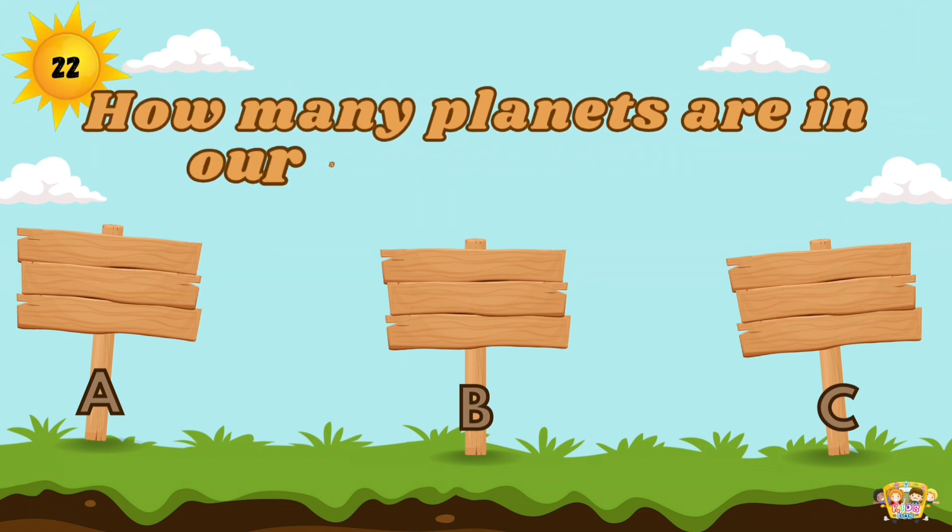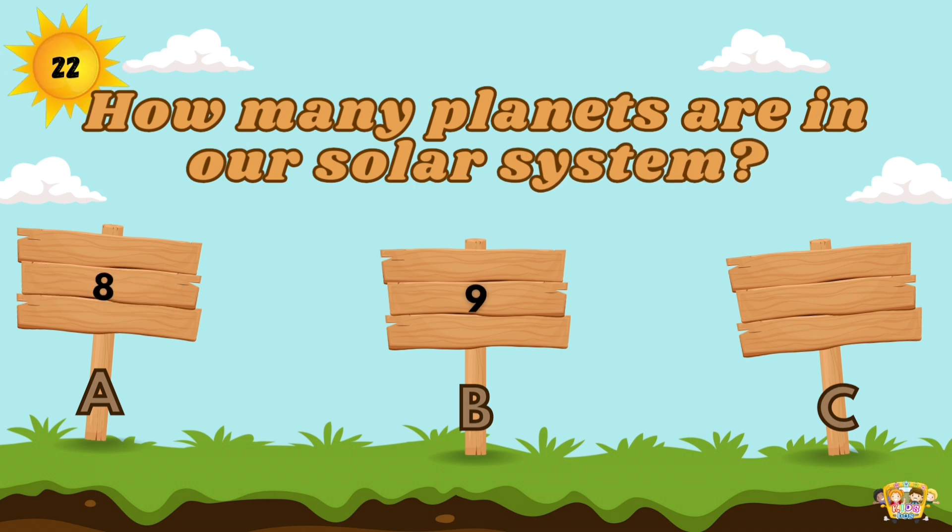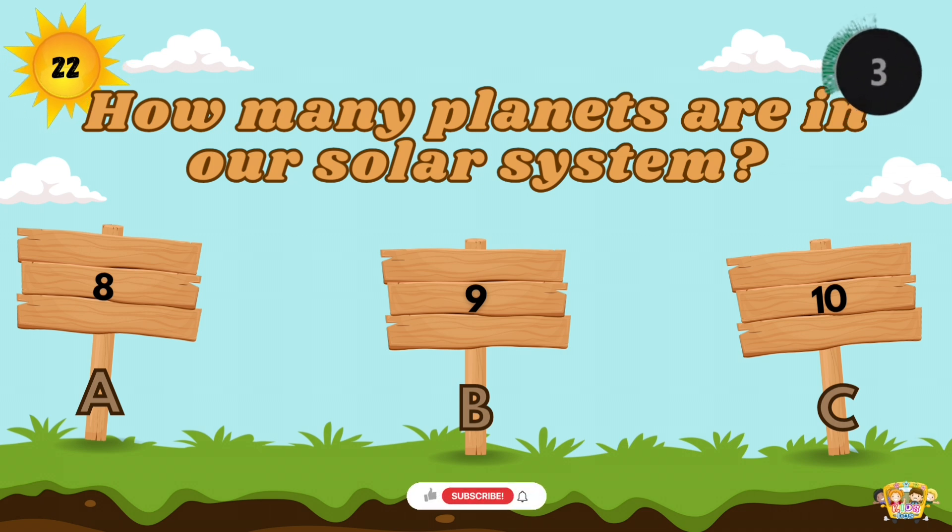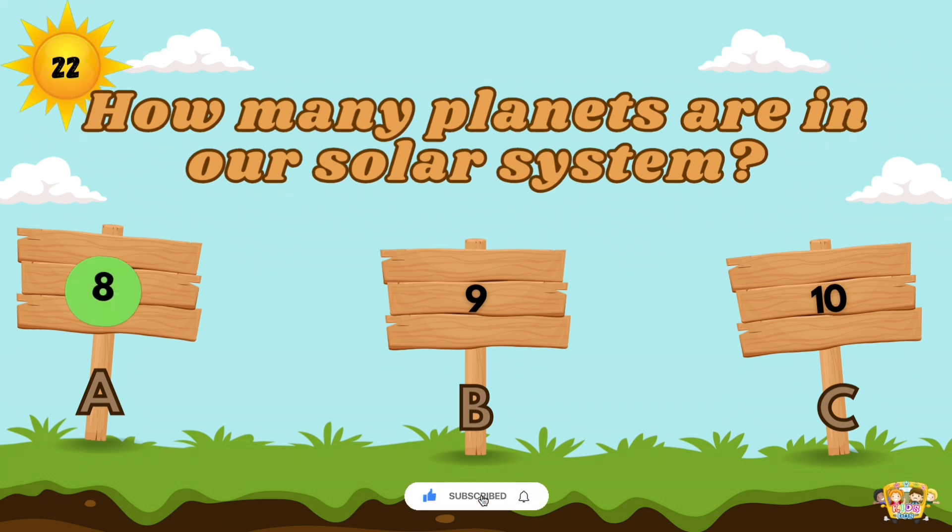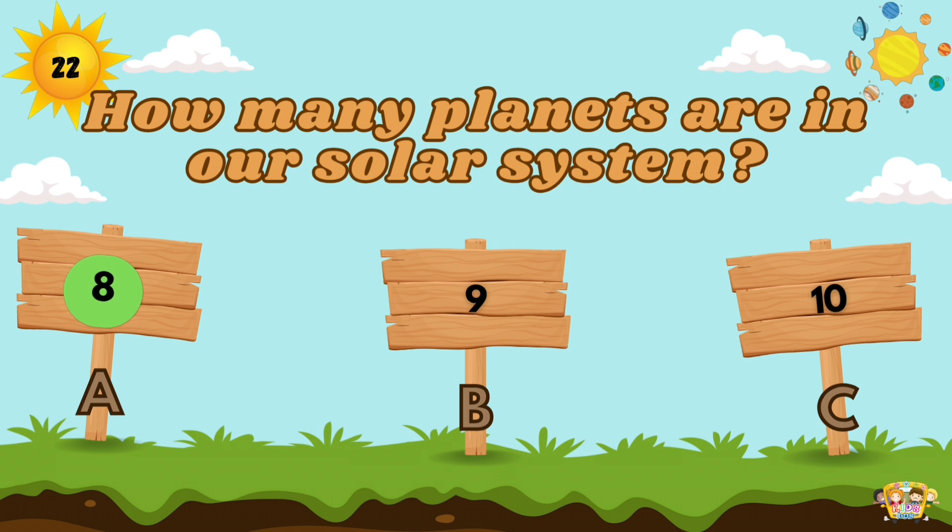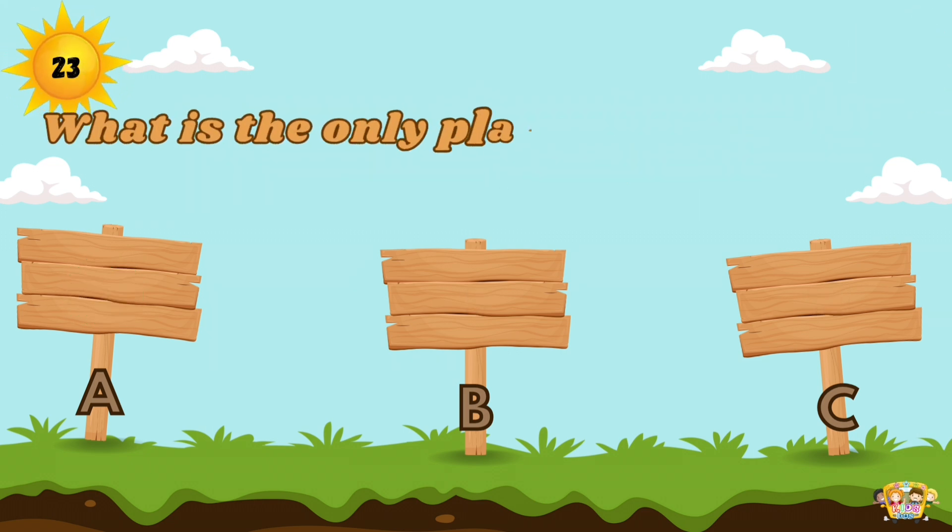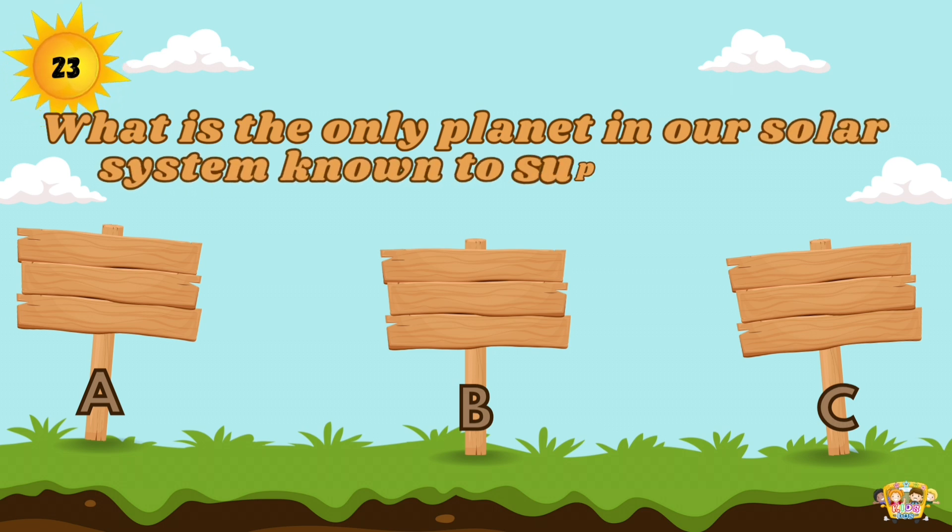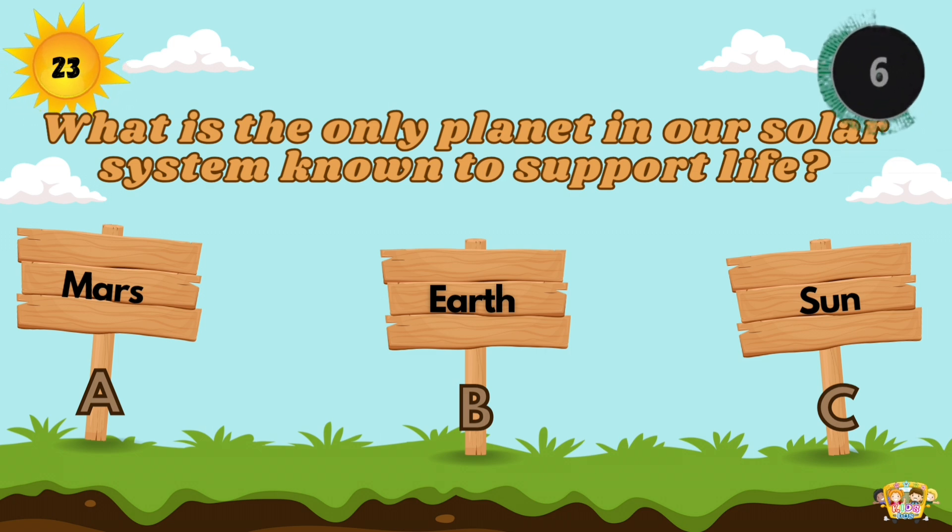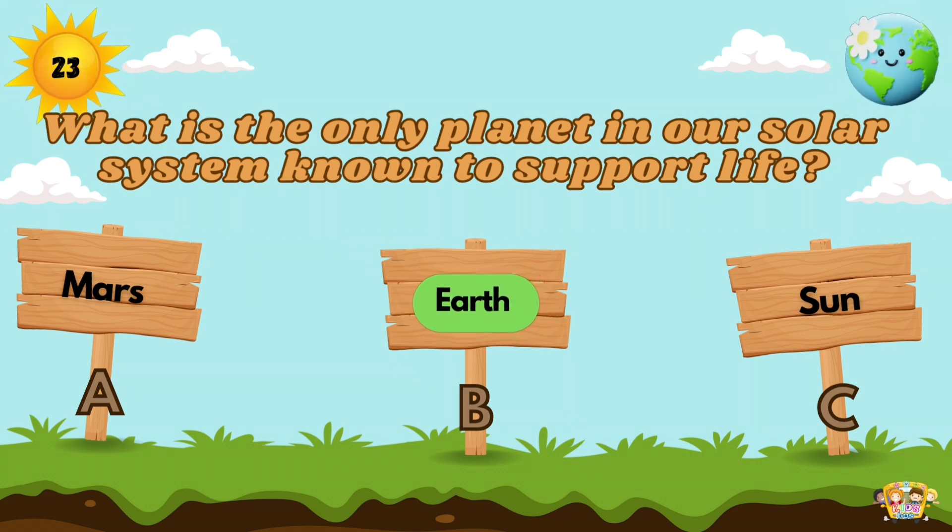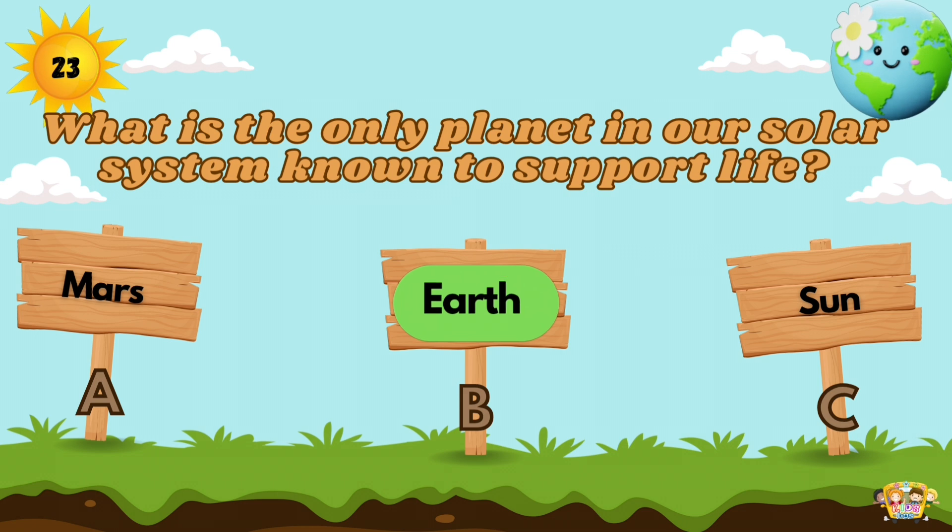How many planets are in our solar system? There are 8 planets in our solar system. What is the only planet in our solar system known to support life? Earth is the only planet in the universe known to possess life.